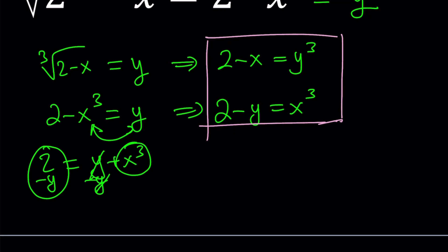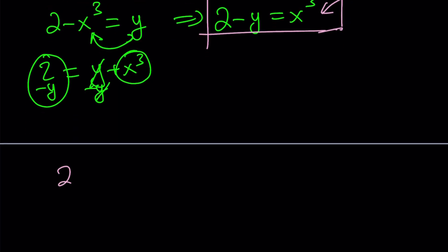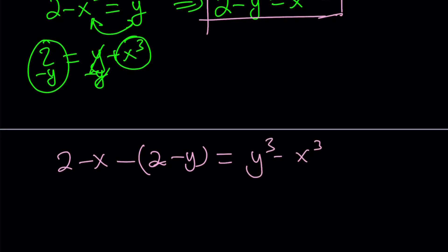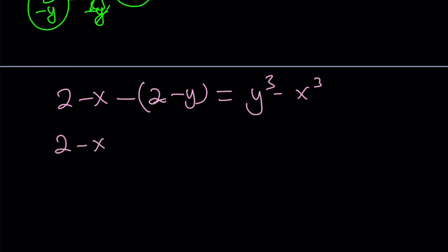So here's what I'm going to do. I'm going to subtract these equations. Especially, I see that I have the same number, 2, 2, they're going to cancel out. You could also isolate 2 and set it equal to each other. No matter what you do, you're going to get something like this. 2 minus x minus 2 minus y is equal to y cubed minus x cubed. So I subtracted the equations, first minus second, and then if you expand, minus 2 plus y, you're going to see that the 2 cancels out. And we end up with y minus x on the left-hand side, and y cubed minus x cubed on the right-hand side.